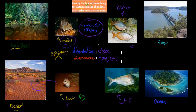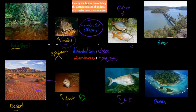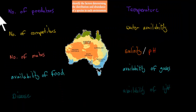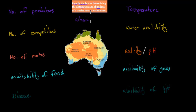Species are those which are very similar in their features but can also produce fertile offspring. For example, all humans are of the same species, but humans and apes are different species. Now for the dot point: identify the factors that determine distribution — where we can find certain species — and abundance — how many.